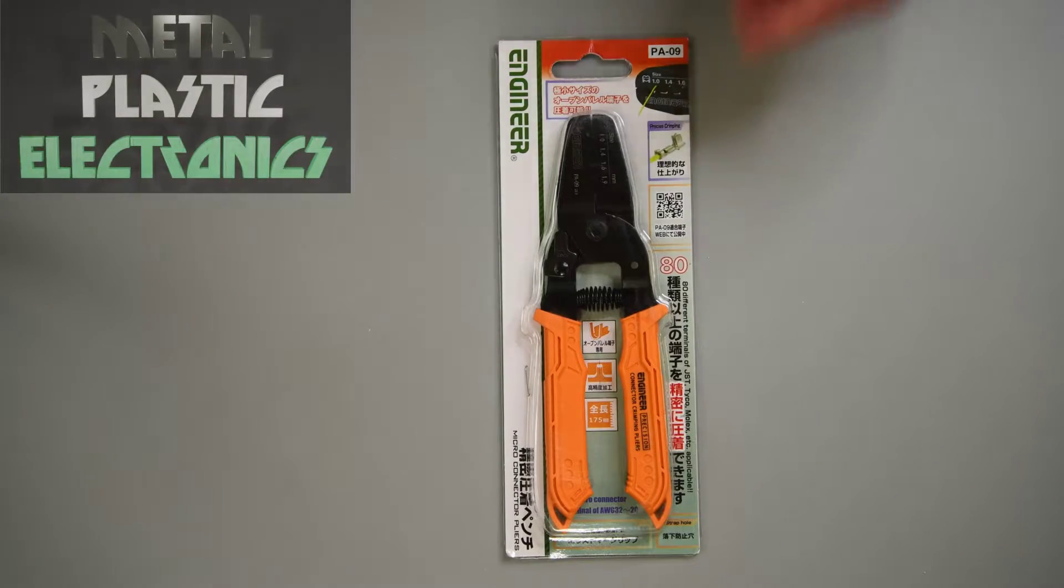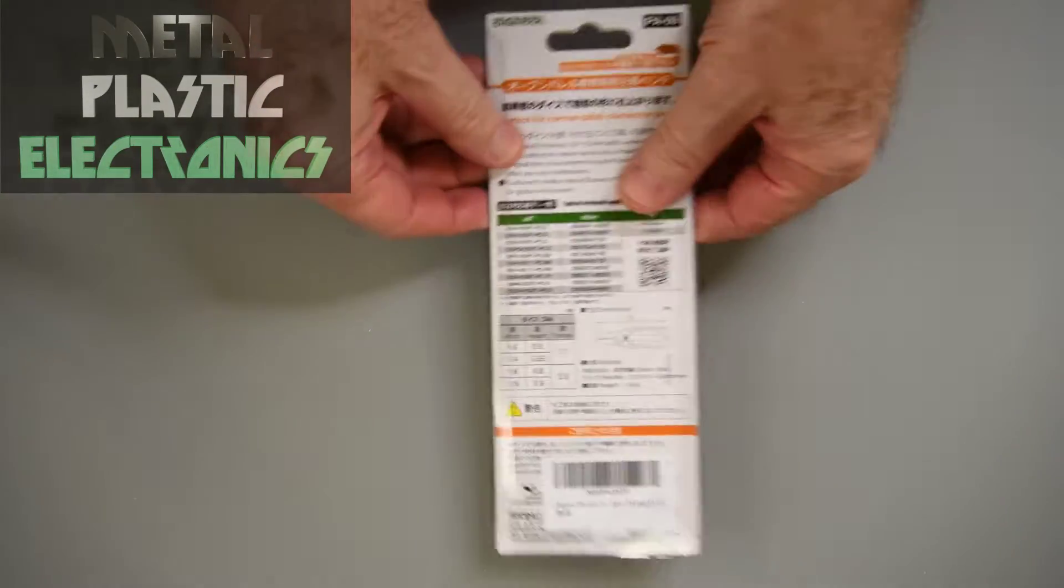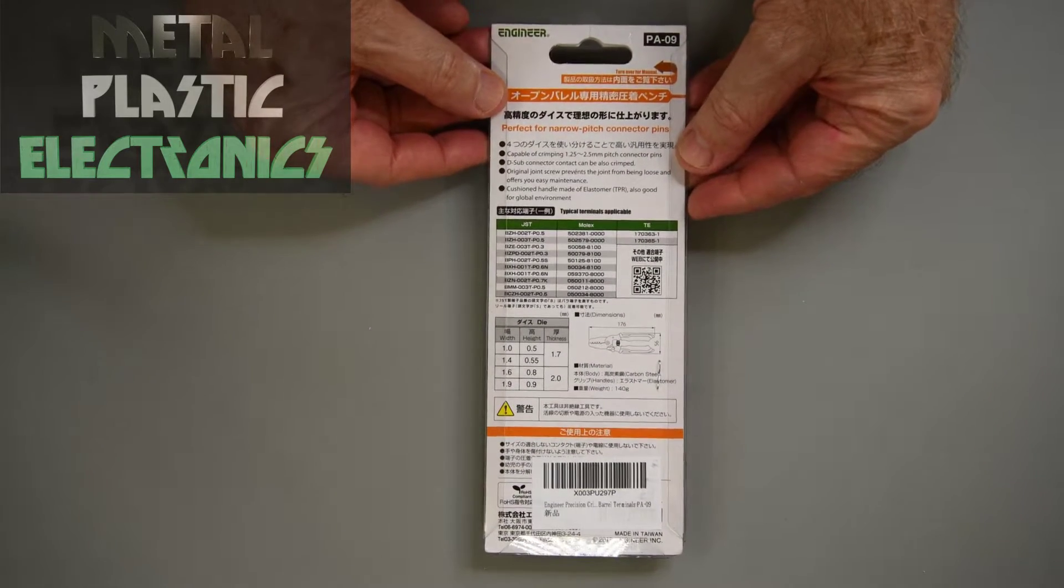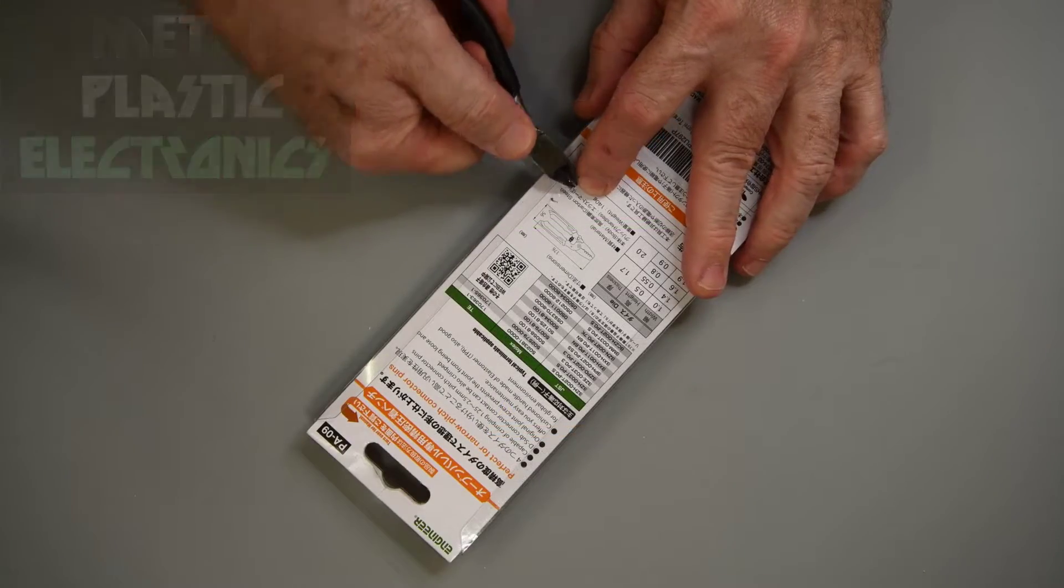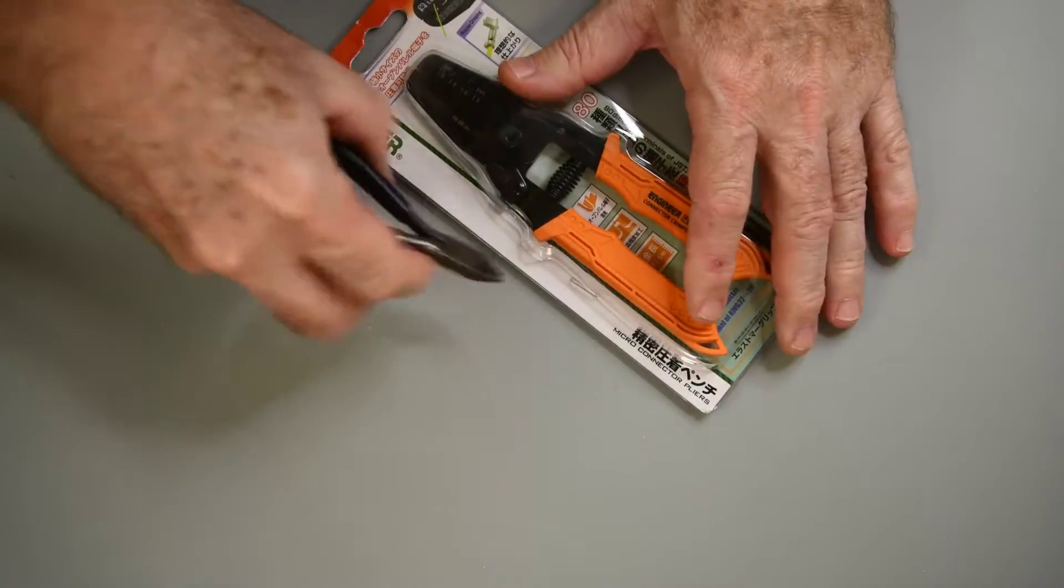I've still been looking for an affordable crimping tool for the 1.25 millimeter pitch ClickMate terminals. A comment on my IWS-3220M versus ClickMate video mentioned the PA09 crimpers, so I looked them up.